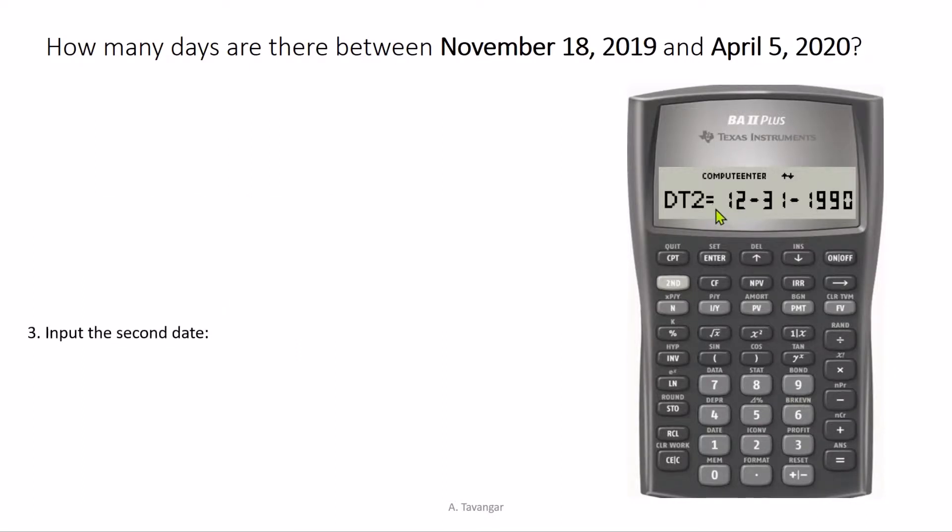We first input the month. April is the fourth month of the year, therefore four. We separate it from the rest of the date using the decimal point. Then comes the day, but you have to input zero five, not just five. So two digits for a day, two digits for the year.